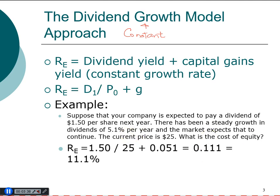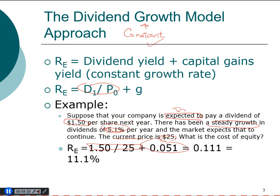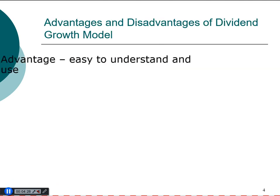For example, a company is expected to pay a dividend of $1.50 next year (dividend in year one), the growth rate is a steady 5.1%, and today's stock price is $25. The dividend yield is $1.50 divided by $25, and adding the growth rate of 5.1%, the overall required return for the stock is 11.1%.